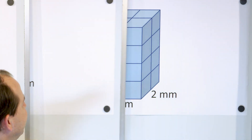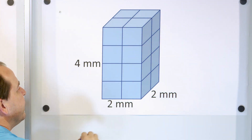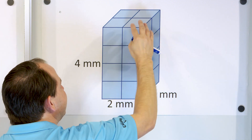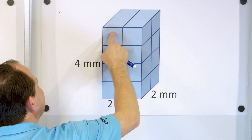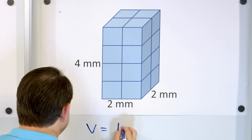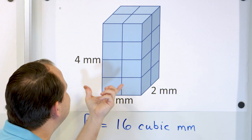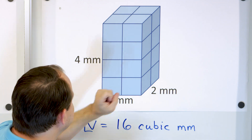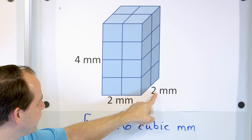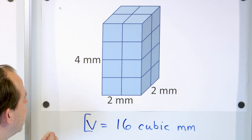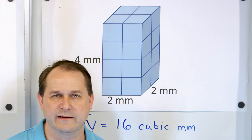We have four cubes on the bottom layer, four more in the next layer, four more in the next, and four more in the top layer — four, eight, twelve, sixteen. So there are 16 of them total. The volume is 16 cubic millimeters, meaning 16 cubes each with one millimeter on each edge fit inside the shape. Checking by formula: two times two is four, and four times four is 16. The formula length times width times height holds, but the focus of this lesson is understanding how to count the cubes.